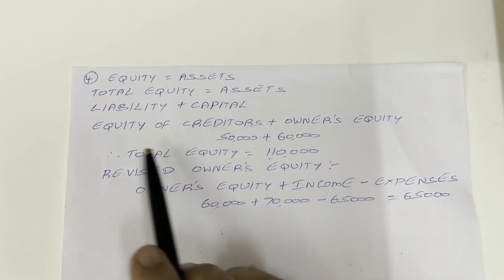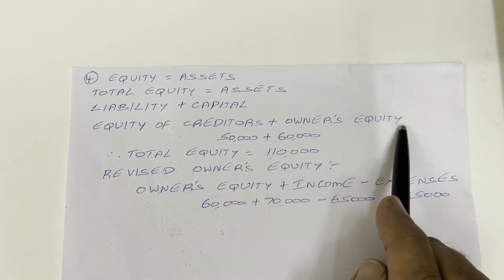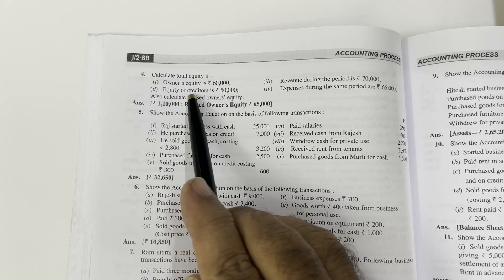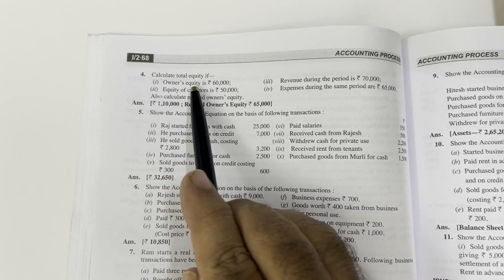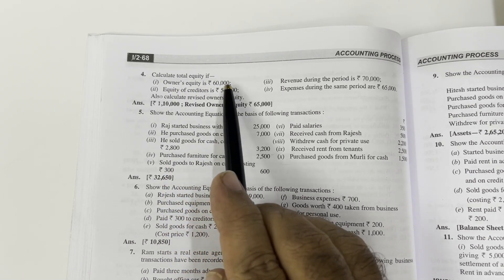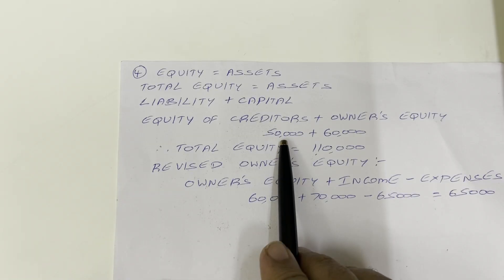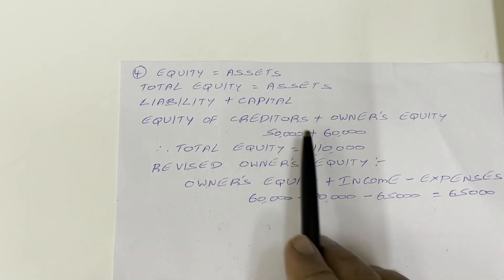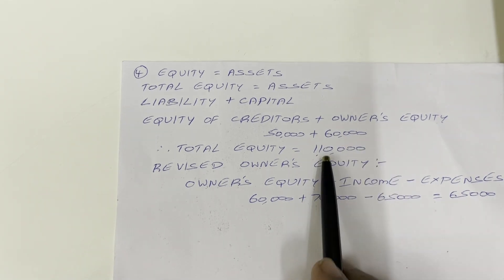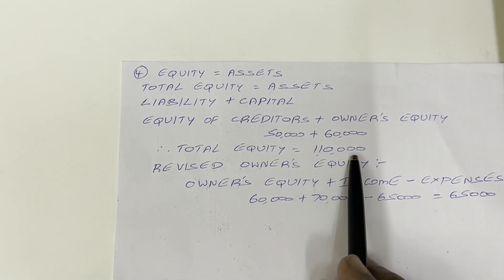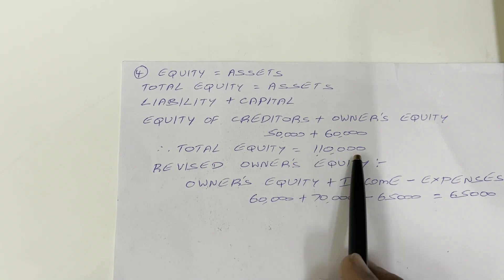So liability plus capital can also be written as equity of creditors plus owner's equity. Equity of creditors is 50,000 rupees and owner's equity is 60,000 rupees. Thus, total equity is equal to 50,000 plus 60,000, which equals 1,10,000. So the first question answer is 1,10,000.